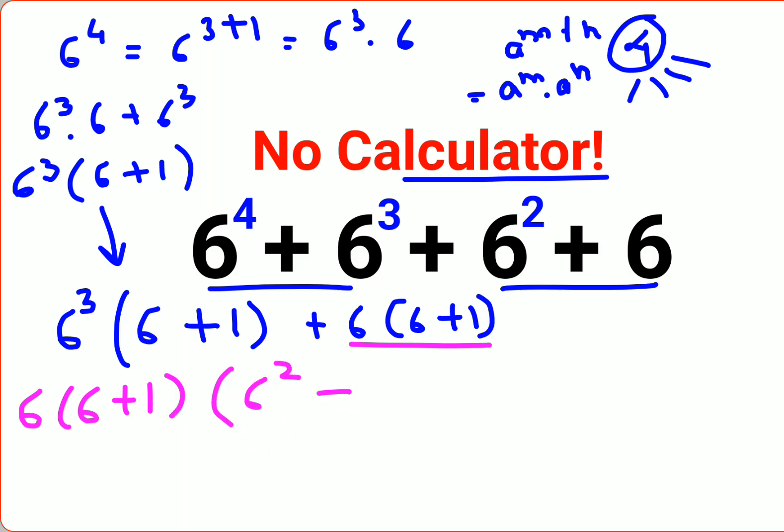So what happens over here is you're getting this as 6 × 7 × 37. This is 36—6² is 36, plus 1 gets you 37.